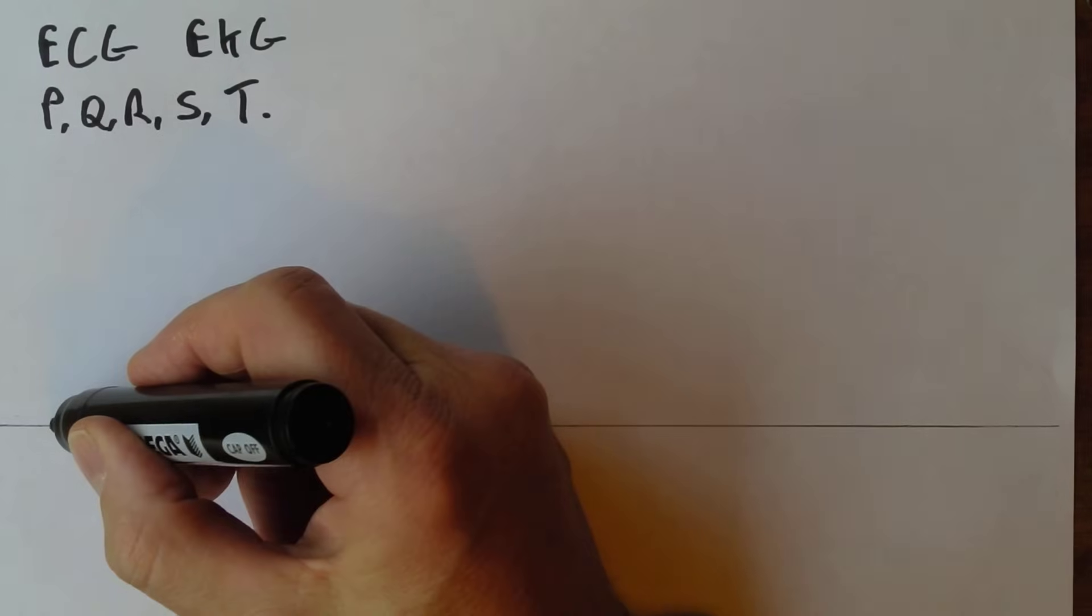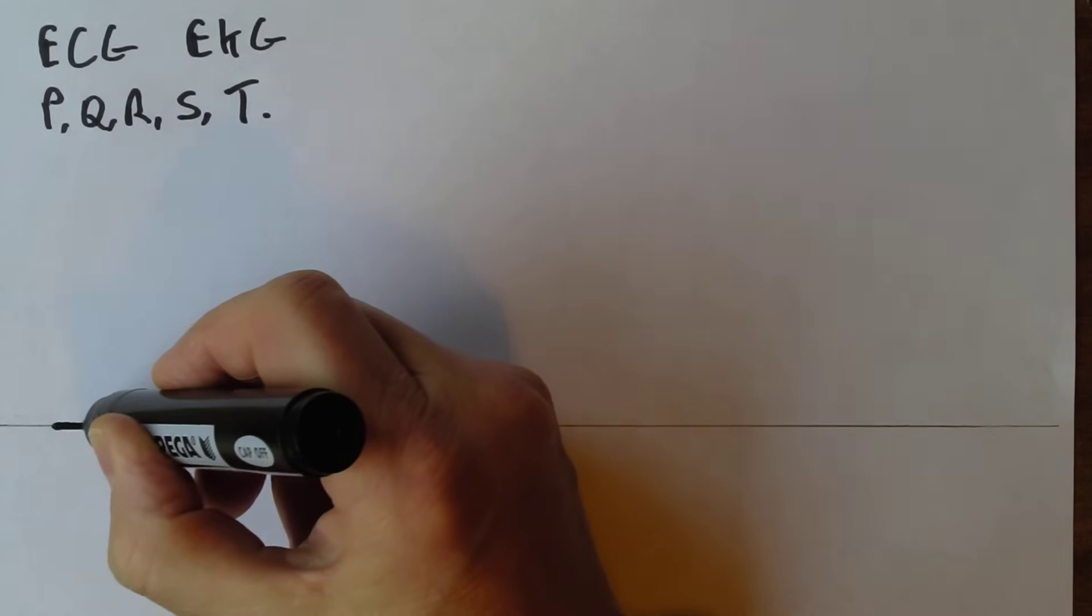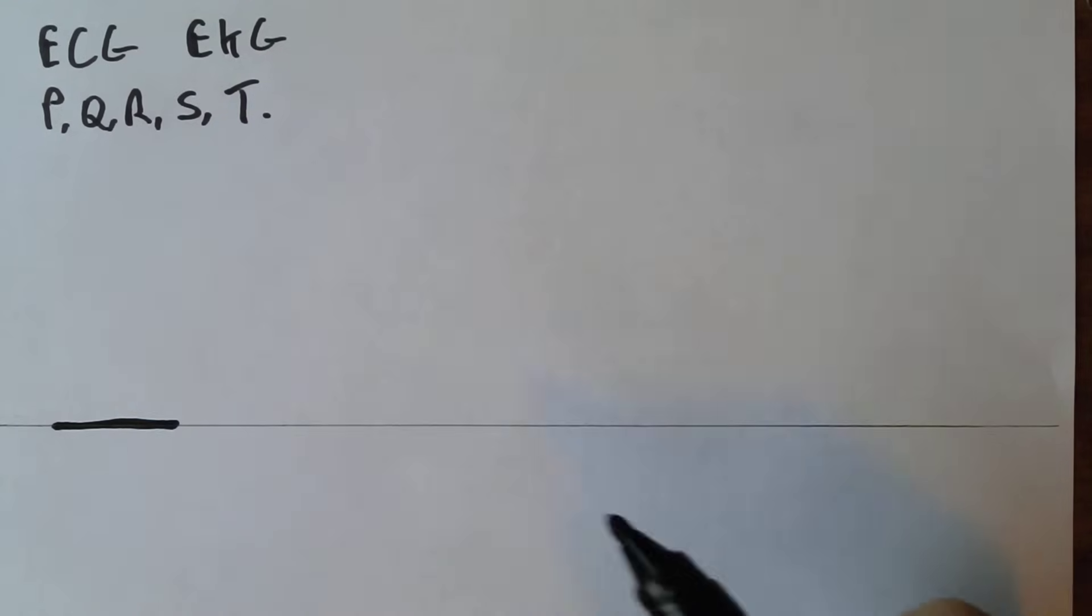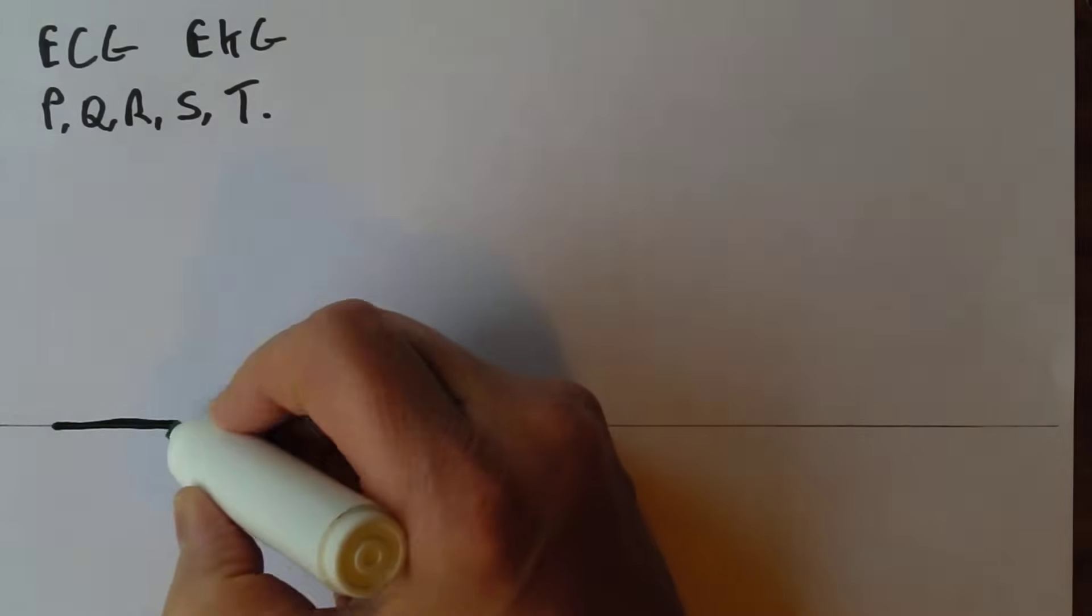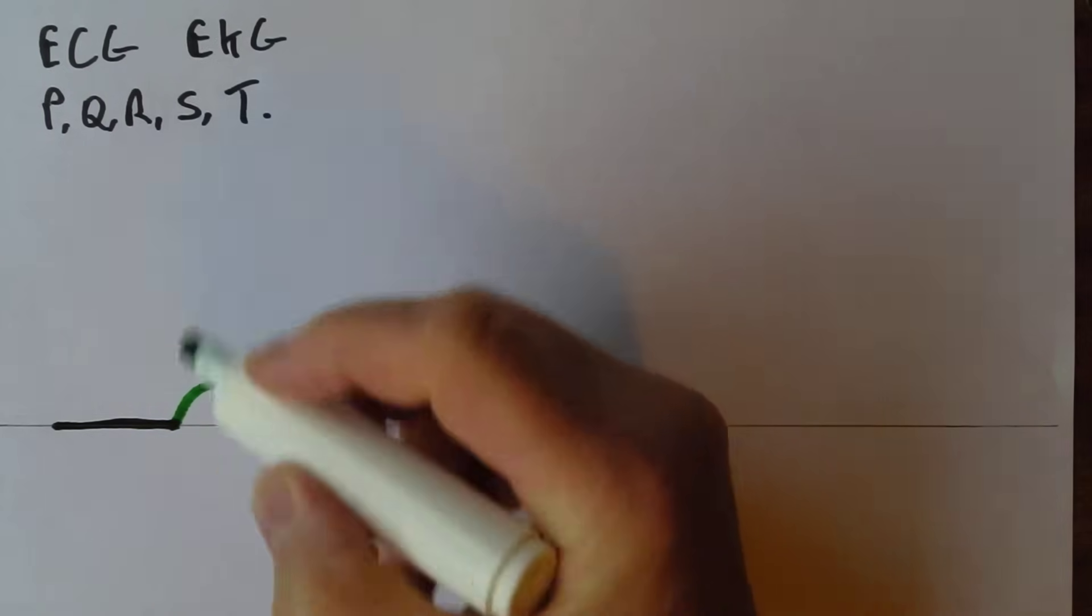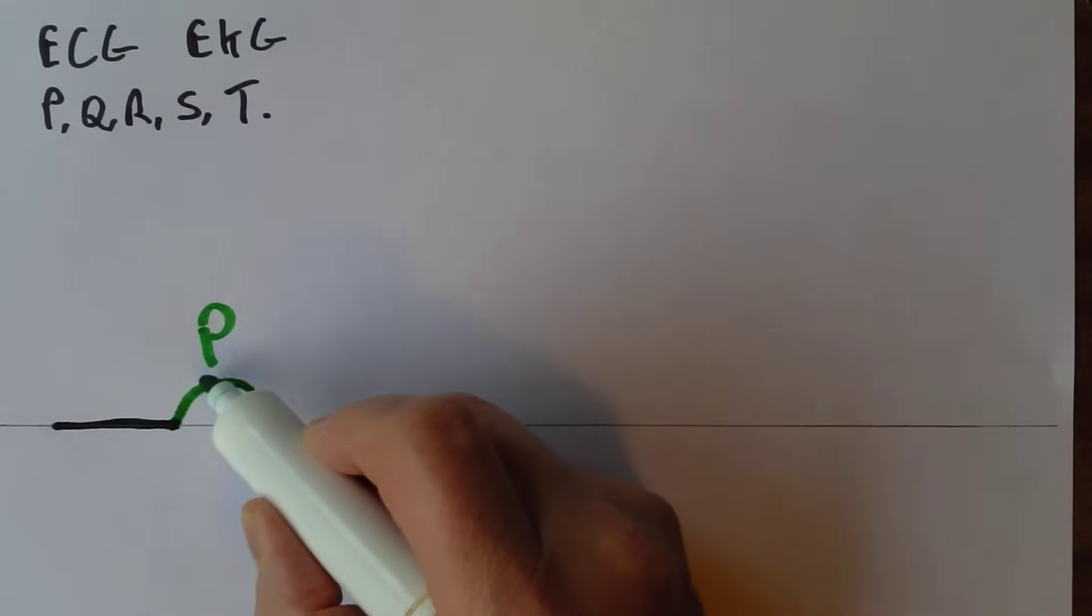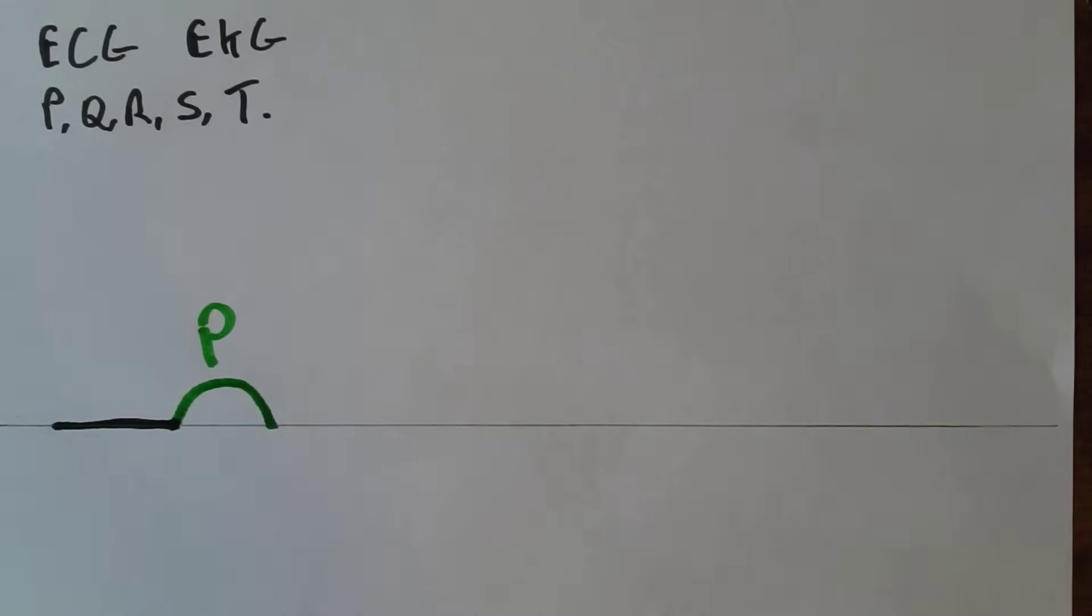So we start off on the isoelectric line. Now iso means the same. So here we don't have any significant electrical activity but then we get electrical activity in the form of the P wave. Now the P wave goes up and it goes down. So all of that in green is the P wave. The bit that goes up and the bit that goes down and as we see it goes back down to the isoelectric line just here.